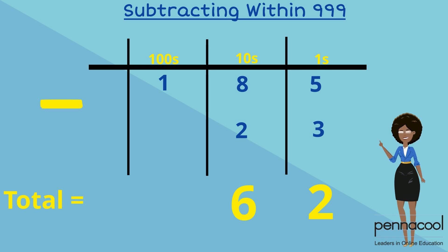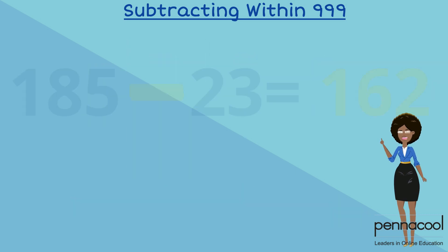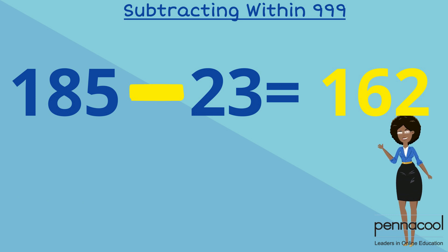There's nothing to subtract in the hundreds column so we simply bring down the 1 into our answer space. Well done! So we know our answer for 185 subtract 23 is 162.